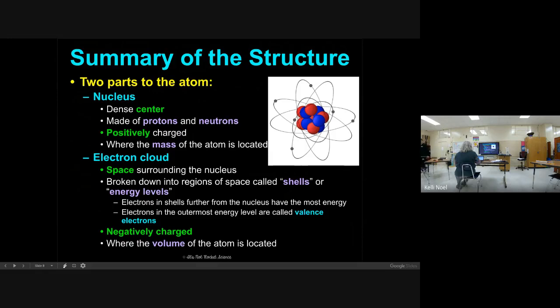Electrons that are in the outermost energy level, or that are further from the nucleus, have the most energy. Electrons that are in the outermost level have what is called valence electrons. That's a term that we're going to use a lot, so it's real important. Valence electrons. Electrons are negatively charged, and they take up the most space, so that's where the volume of an atom is located.